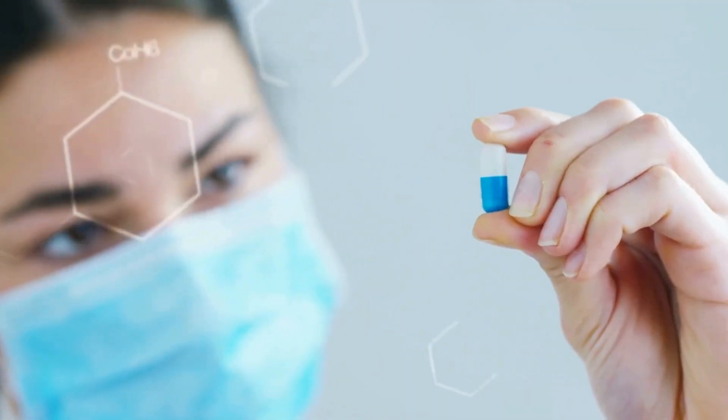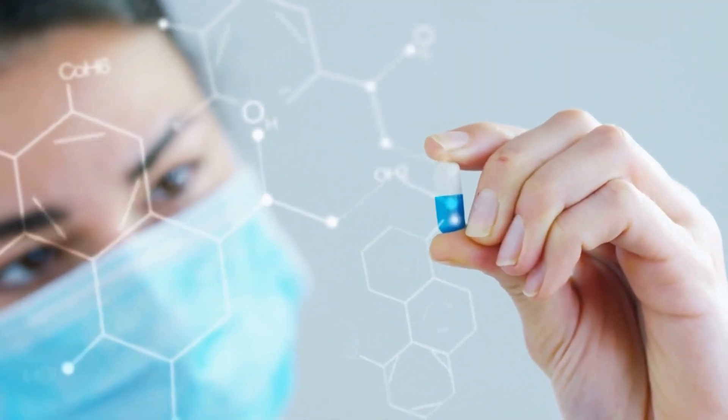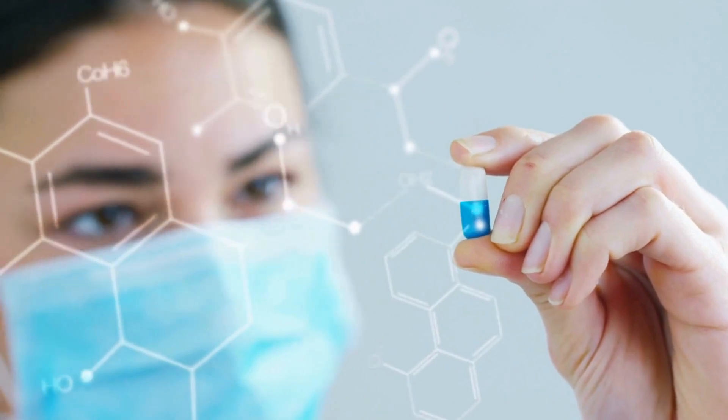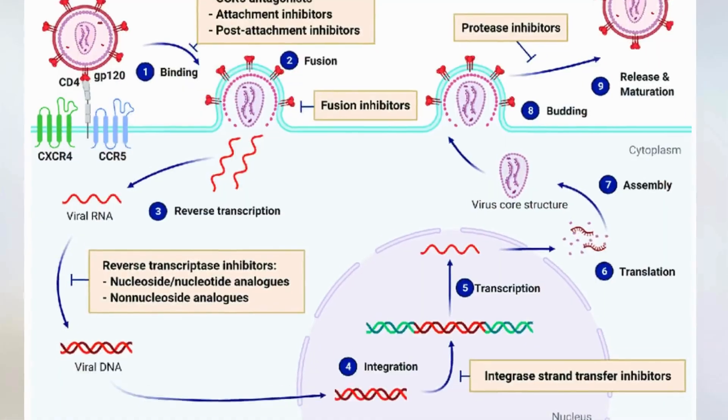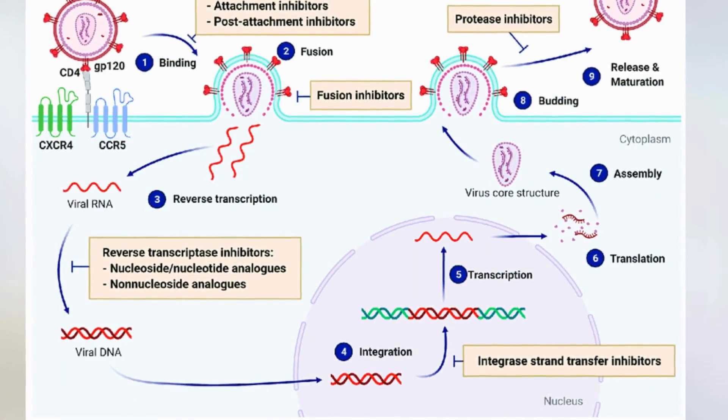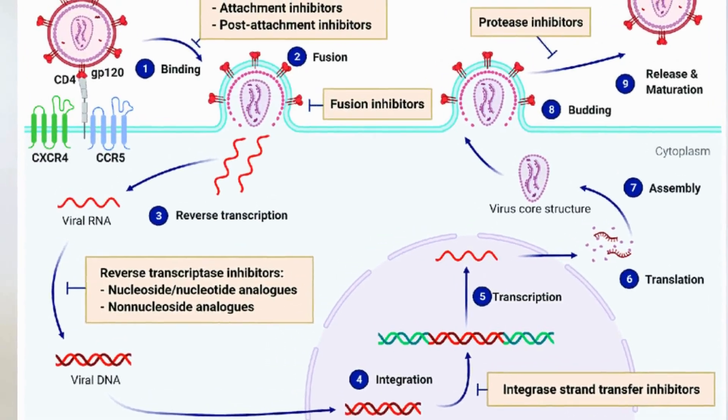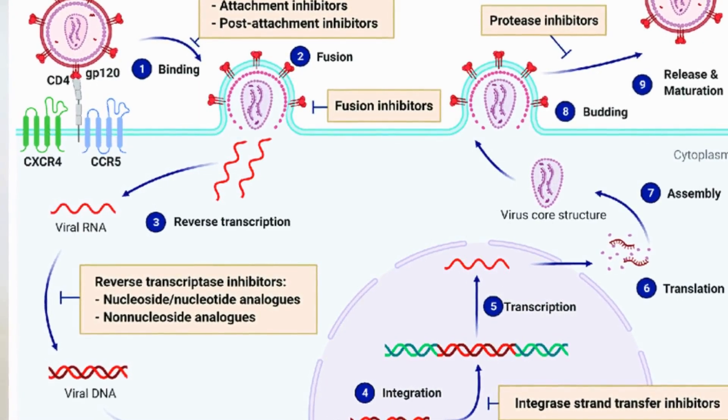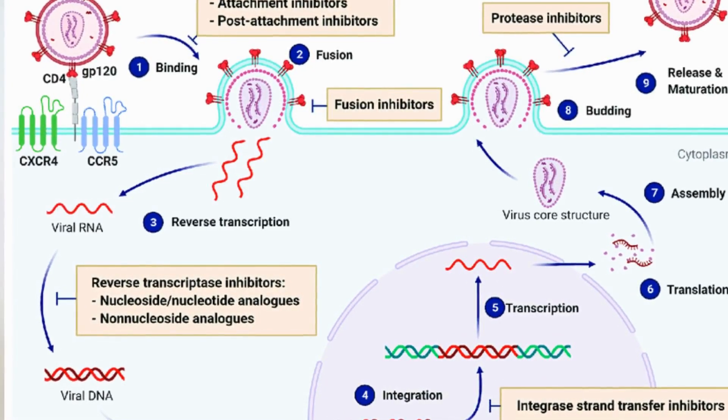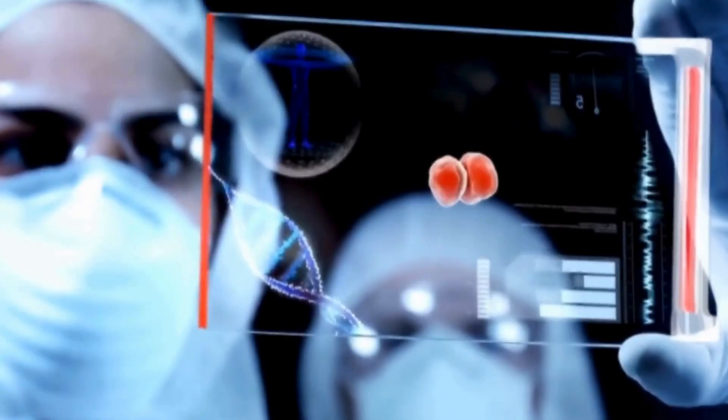ART comprises various drug classes, each targeting distinct stages of HIV replication. Entry inhibitors, capsid inhibitors, reverse transcriptase inhibitors, integrase inhibitors, protease inhibitors, and pharmacokinetic enhancers collectively contribute to an arsenal against the virus.